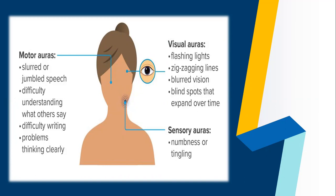Visual aura include flashing of lights, zigzagging lines, blurred vision, and blind spots that expand over time. Sensory aura include numbness or tingling. Motor auras include slurred or jumbled speech, difficulty in understanding what others say, difficulty in writing, and problems in thinking clearly.